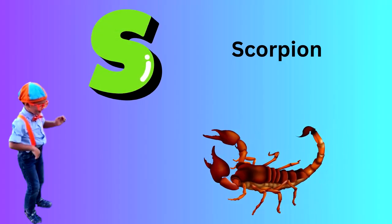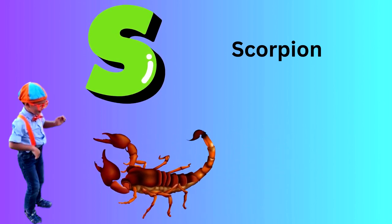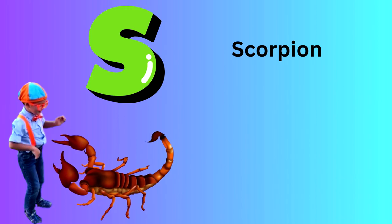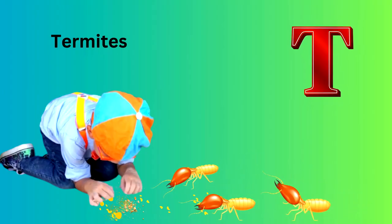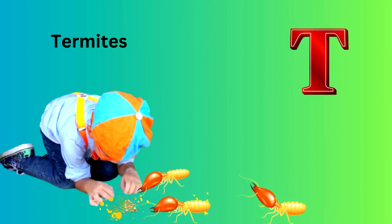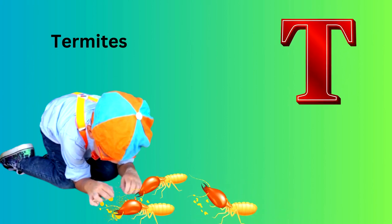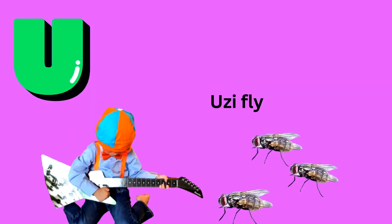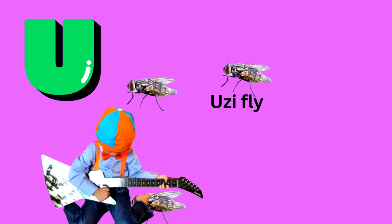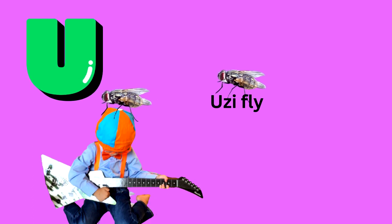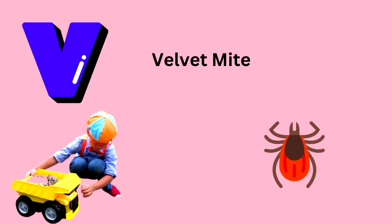S is for Scorpion. V is for Velvet Mite.